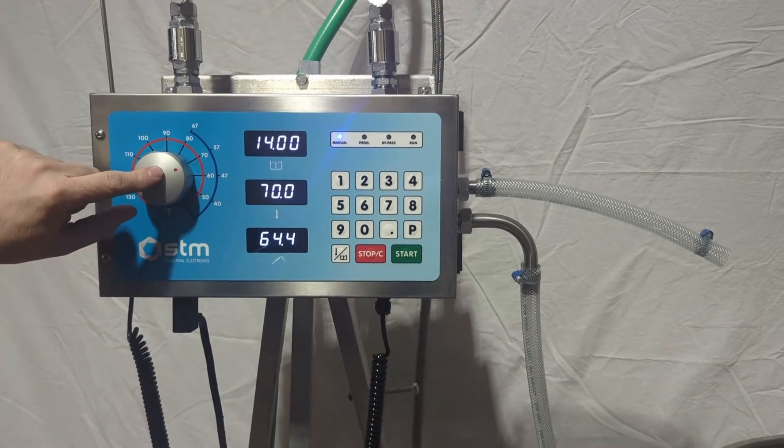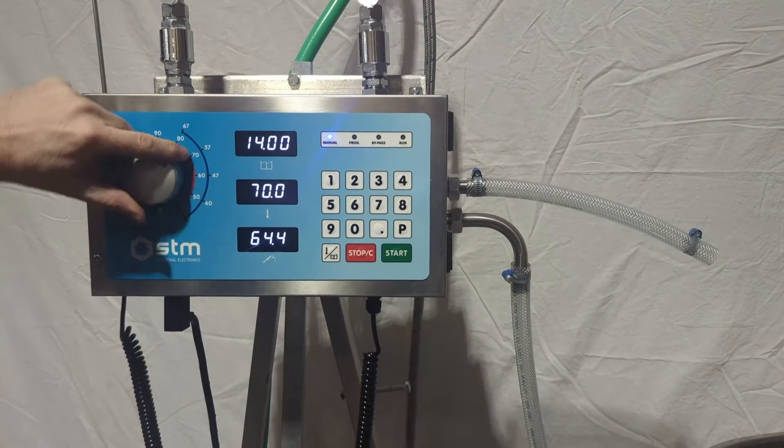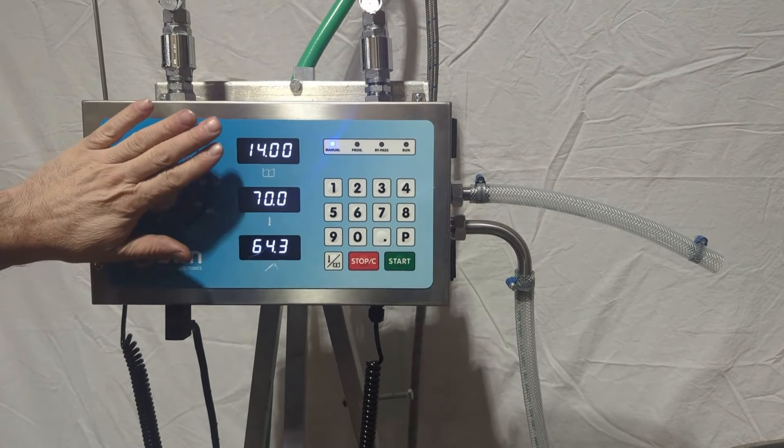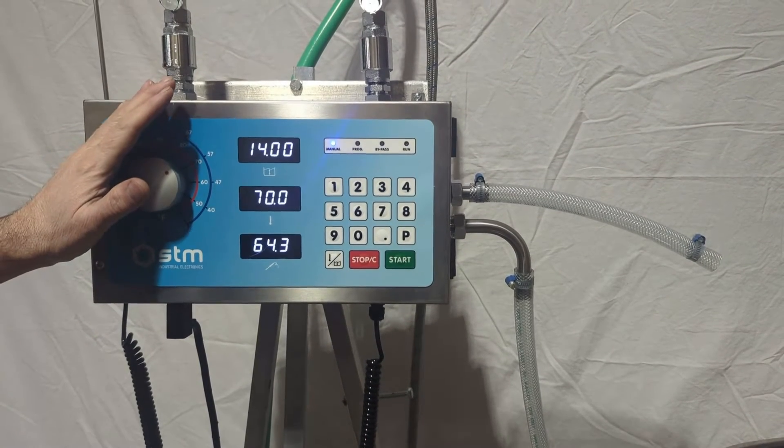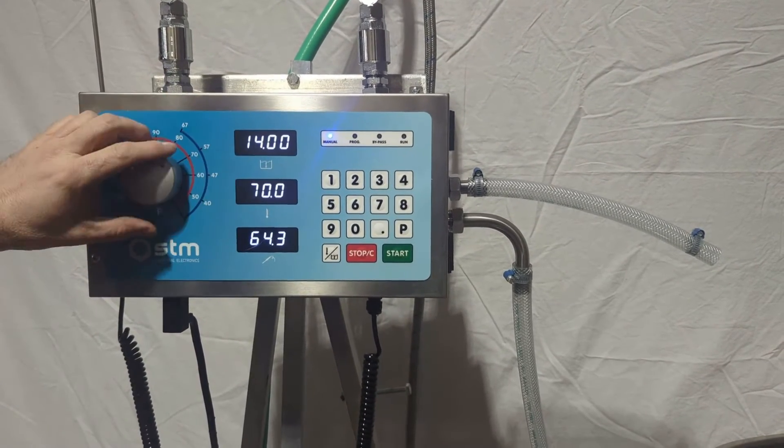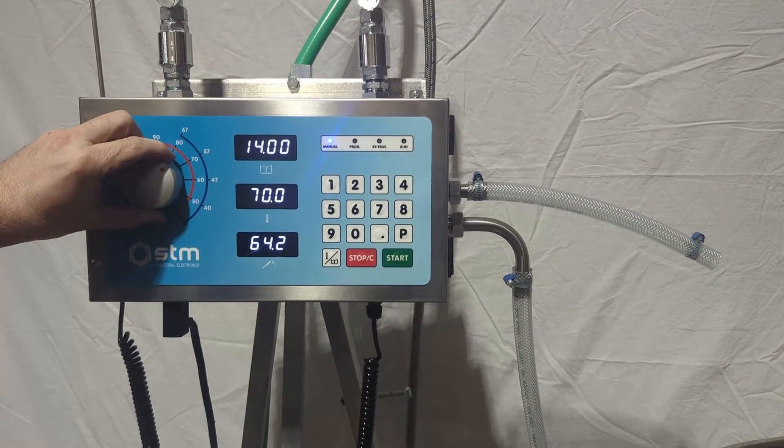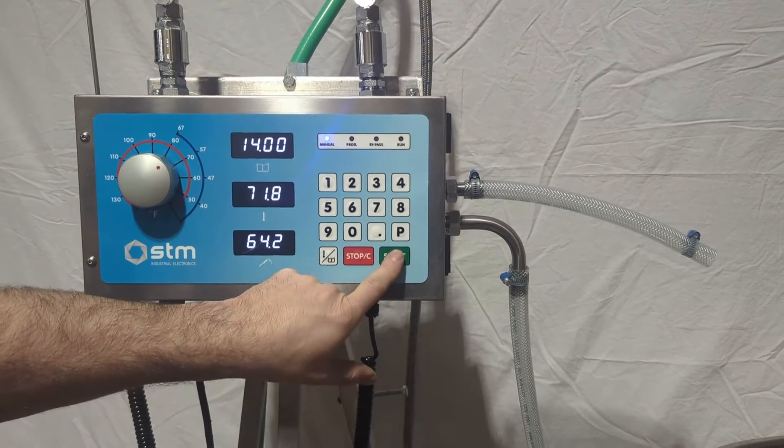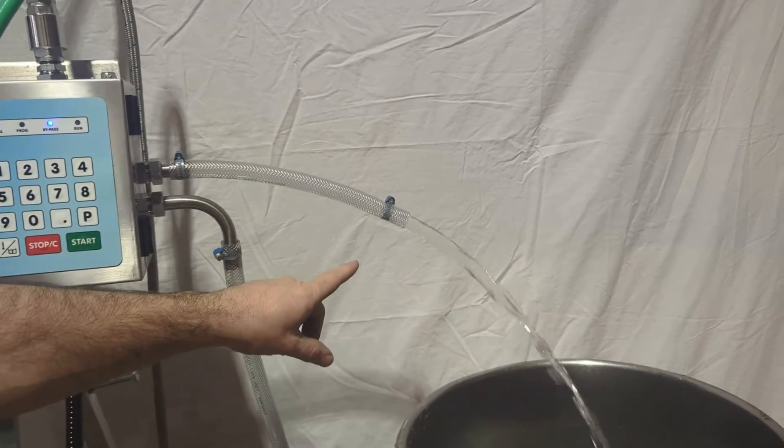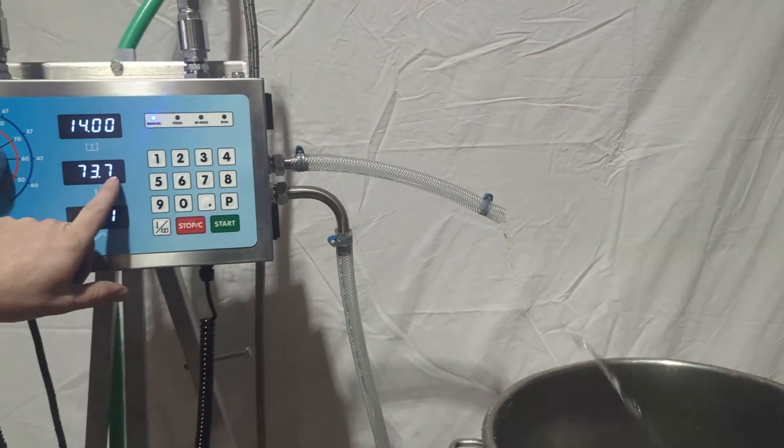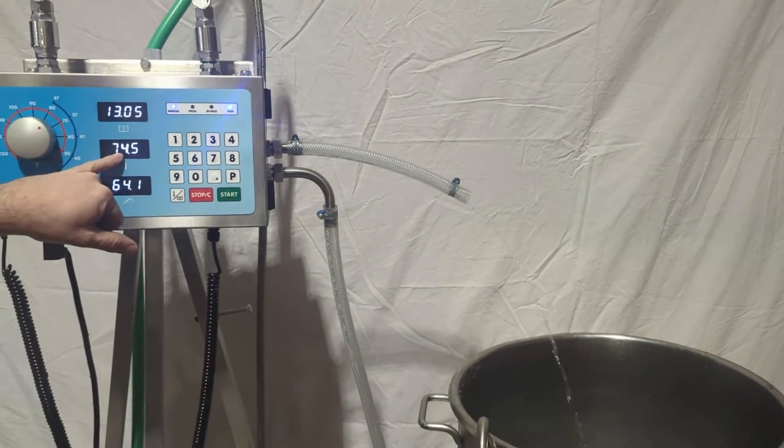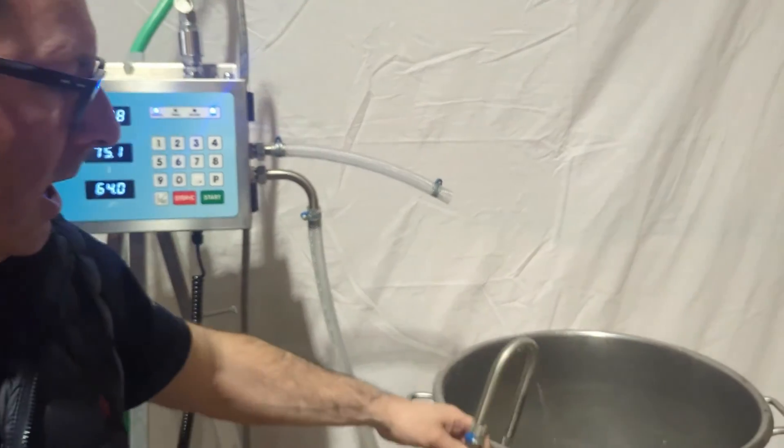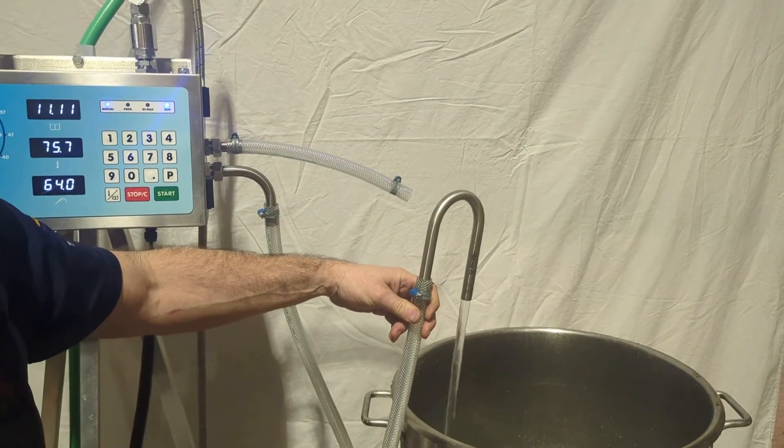We are then, step 3, going to take this knob and set it to number 70. That's going to get us into our range. It might be a little hotter or a little cooler, but that's going to zero in our range. We're then going to hit start, and you can see the meter bypasses. Once it recognizes that we're within our 9 degrees, you can see it dispensing out the outfeed hose.